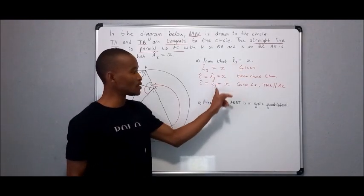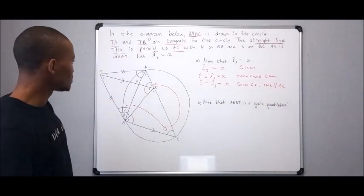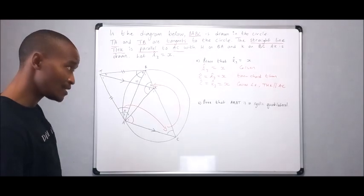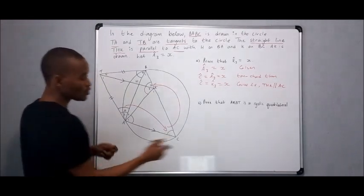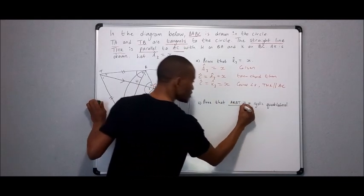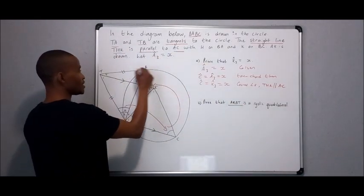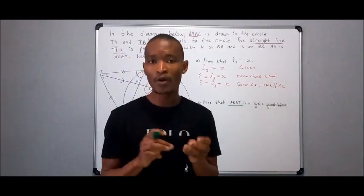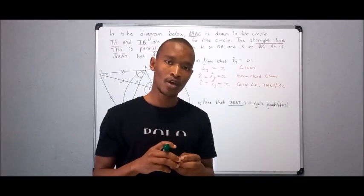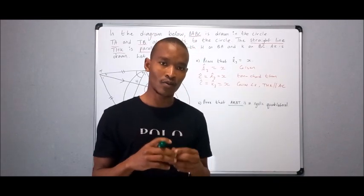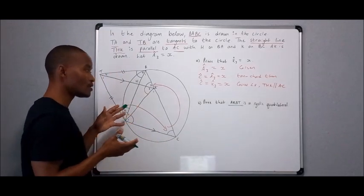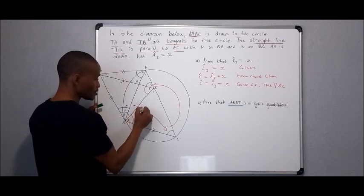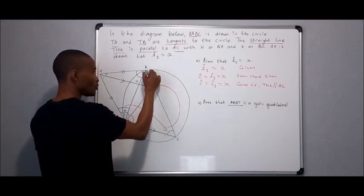Now the second question b: prove that AKBT is a cyclic quad. So you go to the set of points here, AKBT. Prove that it's a cyclic quad. In other words, all these four points must lie on the circumference of the circle. We don't see the circle that goes through AKBT; we need to produce it by construction. Doesn't have to be a perfect circle, you join the four points.